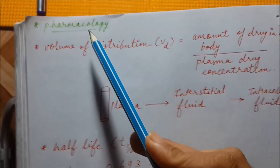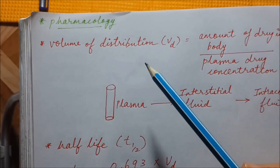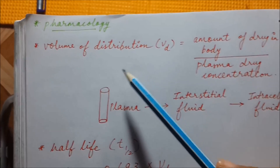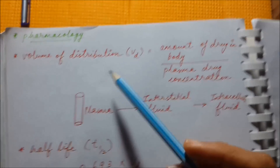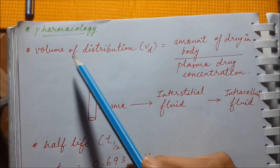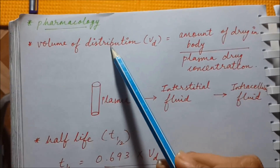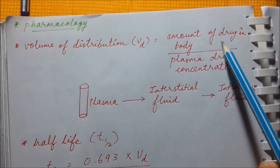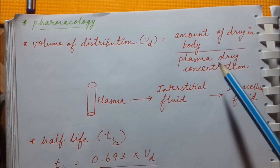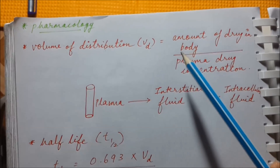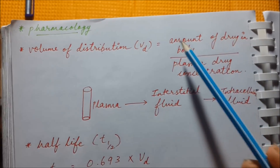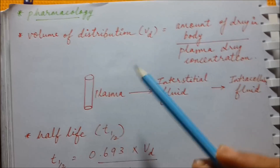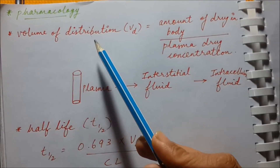Now we will be discussing all the equations in pharmacology. All the equations we have discussed till now are given at the end of the First Aid, so you can read them from there. Let's start with pharmacology. The first thing is volume of distribution — what does the formula say? It is the amount of drug in the body divided by plasma drug concentration. Instead of remembering this formula, let's try to understand practically what it means.